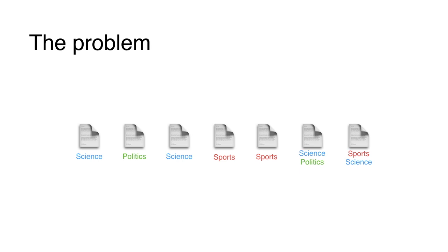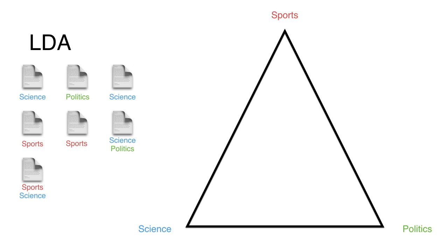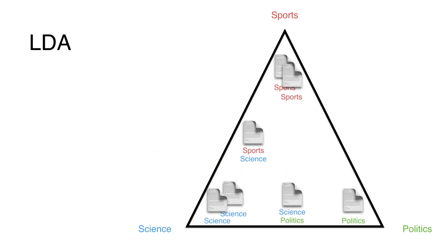Let's go back to the problem. We have a collection of documents and we want to sort them into topics — this is where LDA comes into play. LDA takes a geometric approach. If you have three topics such as science, sports, and politics, it builds a triangle where the corners are the topics. It puts all the documents inside that triangle so that documents are close to the corner of the topic they belong to. Documents between corners represent mixed topics, like the one between sports and science. An article covering all three equally would be in the very center of the triangle.